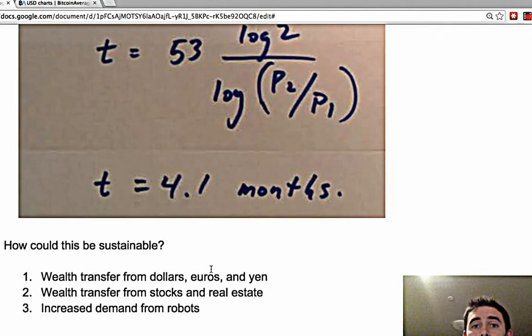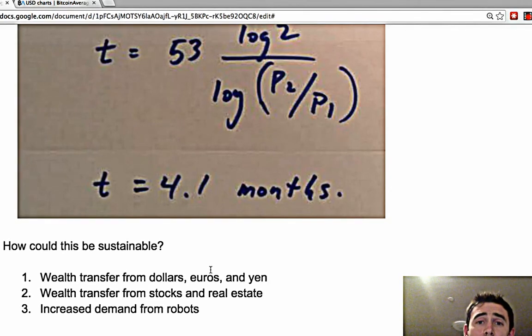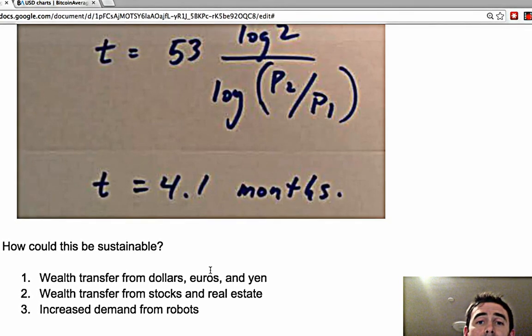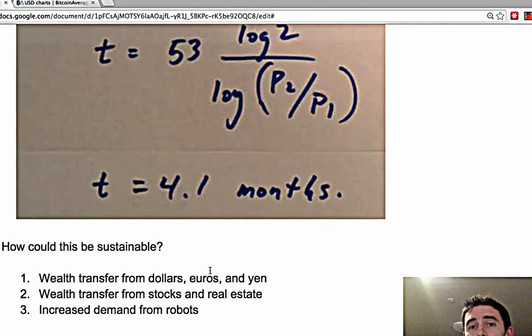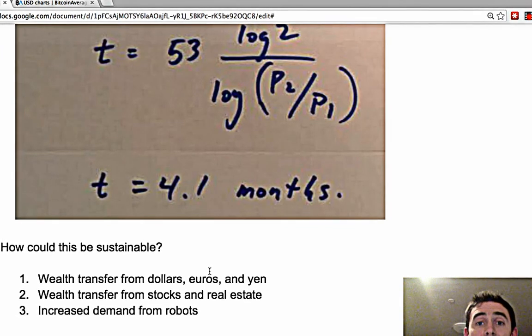Now that we know this doubling time, what does this mean for somebody who has one Bitcoin today? If you have one Bitcoin today, how much do you think that's gonna be worth in say five years?